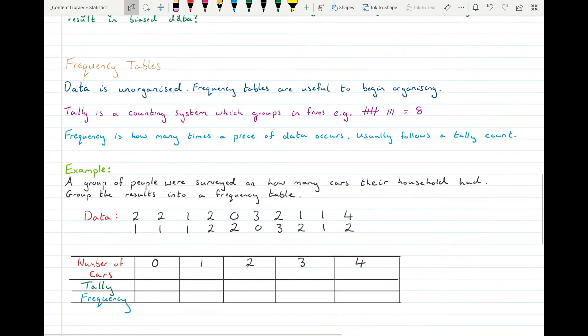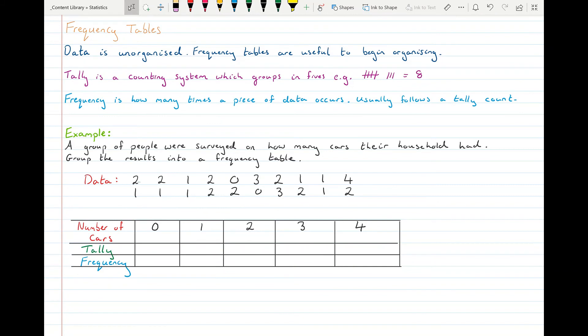An example. A group of people were surveyed on how many cars their household had. Group the results into a frequency table. So all my data points are listed out here. Two, two, one, two, zero, all the number of cars they had. And I have a frequency table drawn up as well. I have the number of cars on the top row. Zero, one, two, three, or four. A tally row followed by a frequency row.